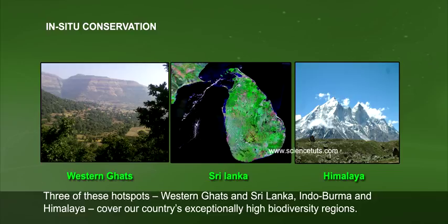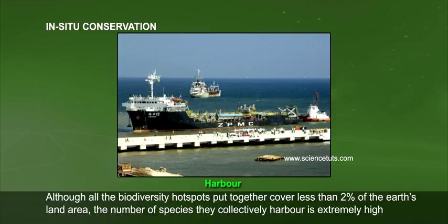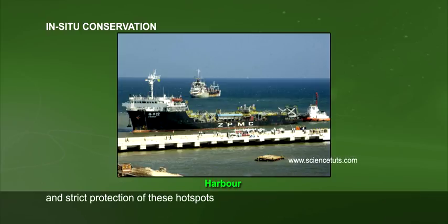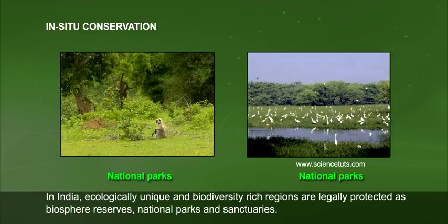Three of these hotspots — Western Ghats and Sri Lanka, Indo-Burma, and Himalaya — cover our country's exceptionally high biodiversity regions. Although all the biodiversity hotspots put together cover less than 2% of the Earth's land area, the number of species they collectively harbor is extremely high, and strict protection of these hotspots could reduce the ongoing mass extinctions by almost 30%.